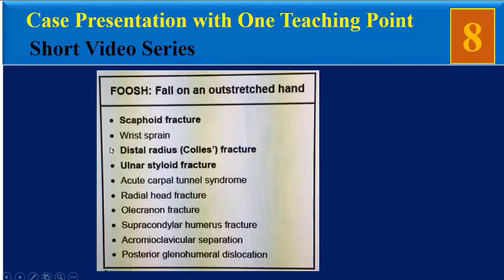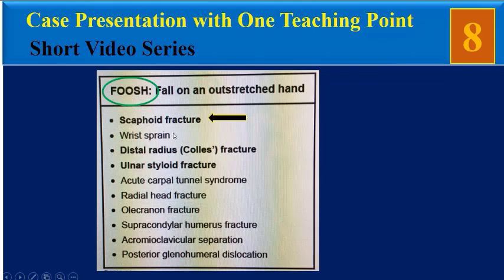This table shows the injuries that may occur following a fall on an outstretched hand, famous as FOOSH injuries. As you can see in this table, one of the most important injuries is scaphoid fractures.